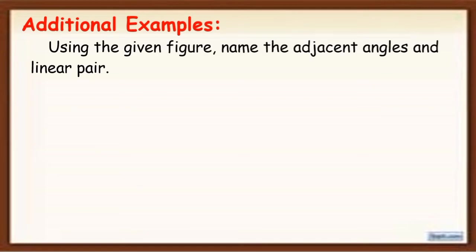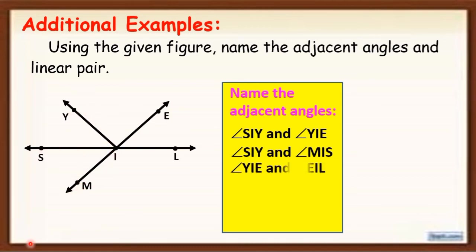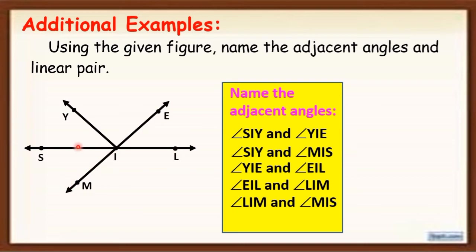Now let's have this example. Using the given figure, name the adjacent angles and linear pairs. So we are going to name the adjacent angles first. The adjacent angles are: angle SIY and angle YIE; angle SIY and angle MIS; angle YIE and angle EIL; angle EIL and angle LIM; and angle LIM and angle MIS. Remember, adjacent angles are two angles that share a common side and have no common interior points.